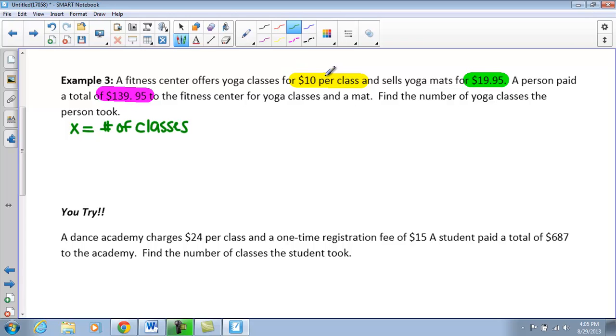Now if we take a look here, when we see per class, that really means multiplication. So when I'm setting up my equation, this is going to be my total, right? So I have $139.95 equals $10 per class plus the mat that this person bought. So now remember we want to go back and get the x all by itself. We want to solve for x.